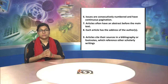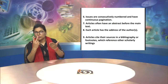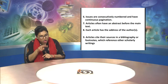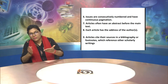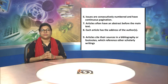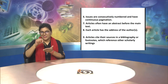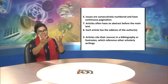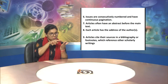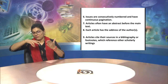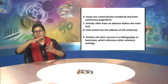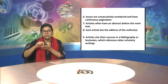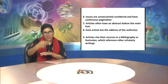Point 4: Scholarly journals are intended for a scholarly audience. Point 5: These journals do not carry any advertisement. Point 6: Issues are consecutively numbered and have continuous pagination. Point 7: Articles often have an abstract before the main text.